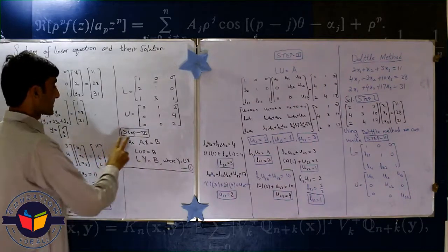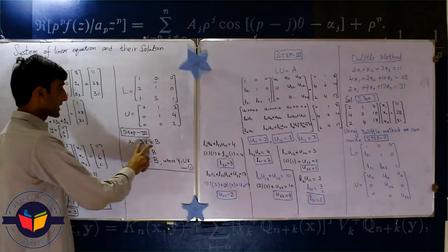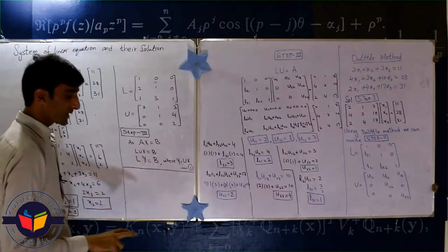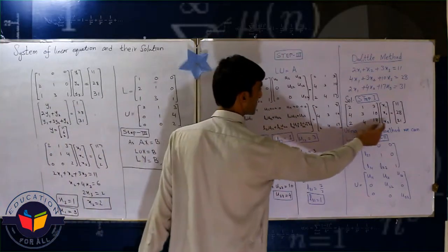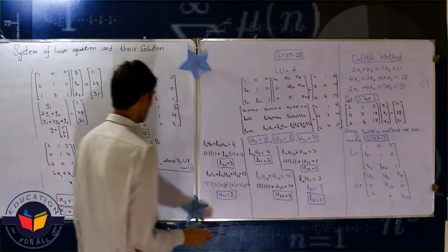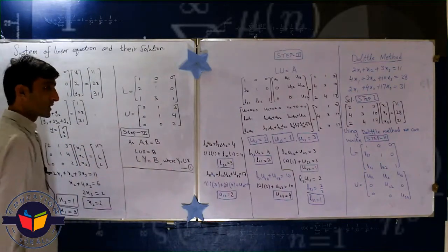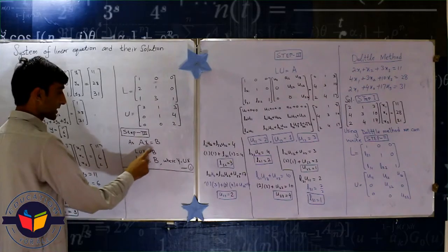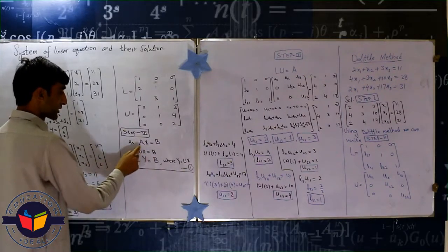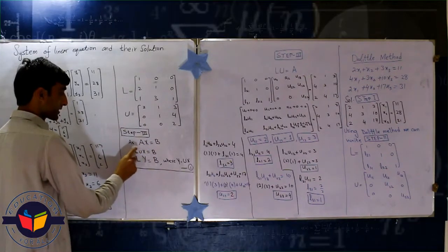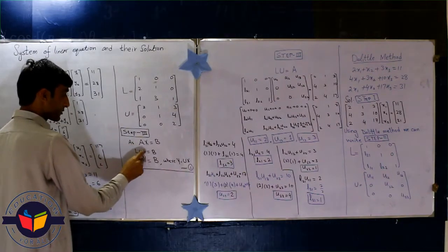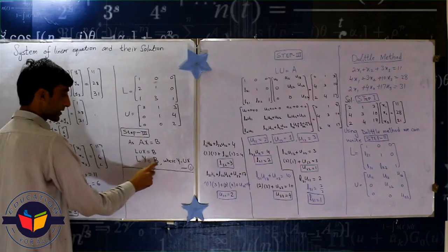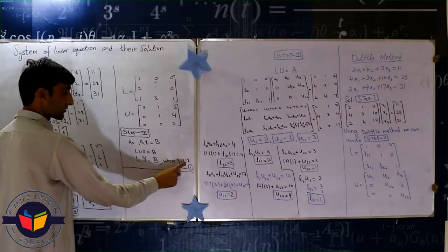Now students, we are on step 3. In this step we write AX equal to B - that is here, that is A and X and B. This one is AX equal to B. Now the A is LU, and X is here, B is this one. Now we write UX from L, and UX is Y, and LY equal to B, where Y is equal to UX.